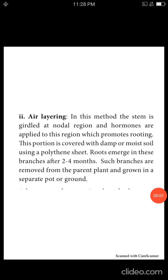In air layering, the stem of the plant is girdled at a nodal region, then covered with a polythene bag after initiation to secrete hormones that promote root formation. In 2 to 4 months, roots emerge from the branches, and those branches are then removed from the parental plant and grown into new soil.